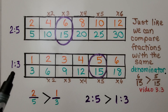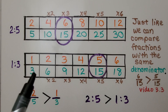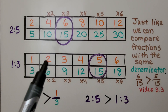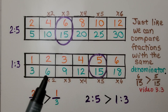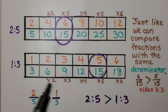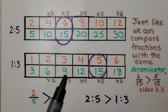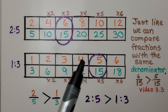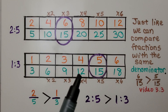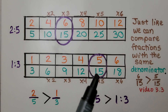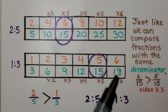We do the same thing for the ratio 1 to 3. We multiply by 2 to get 2 and 6; by 3 to get 3 and 9; by 4 to get 4 and 12; by 5 to get 5 and 15; and by 6 to get 6 and 18.